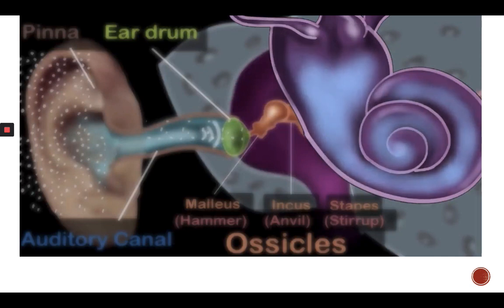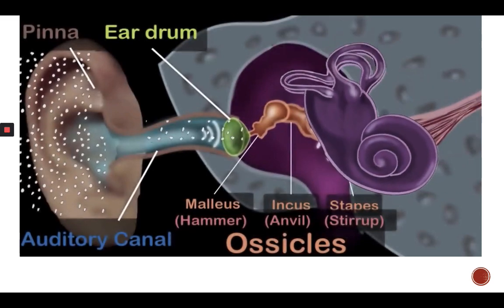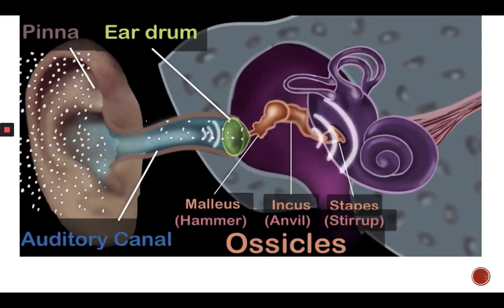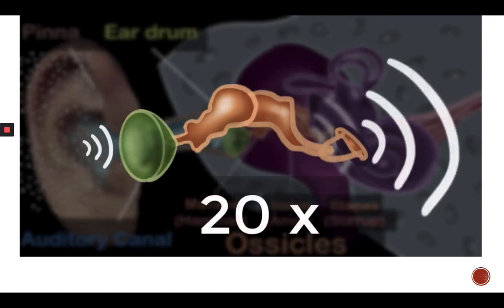It's very easy to swing your arms in the air, but difficult to do that in water, like in a swimming pool. To set the liquid in vibration, the pressure has to be high enough. In fact, our ossicles increase the pressure of the sound about 20 times.